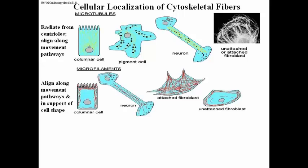When a cell like this attaches to a surface, one of the first things it does is flatten out and then start to move. That requires a reorganization of the microfilaments, and that's what looks so different in the attached fibroblast. Whether a fibroblast is attached or unattached, the distribution of microtubules remains pretty much the same. So it's the microfilaments that rearrange and allow cells to change shape readily when attached versus unattached.